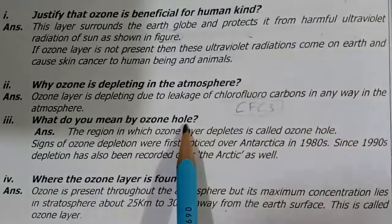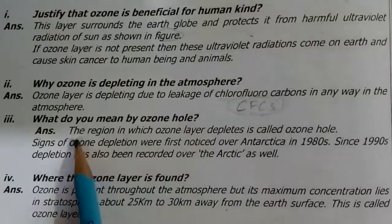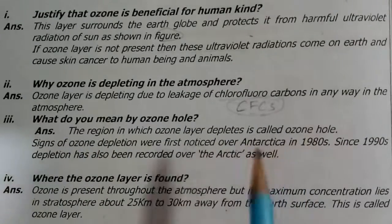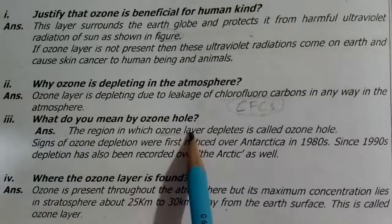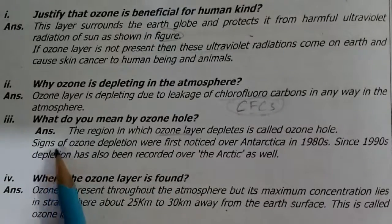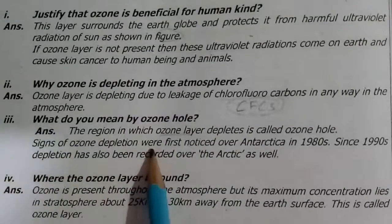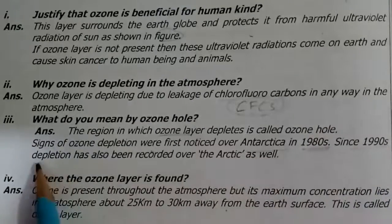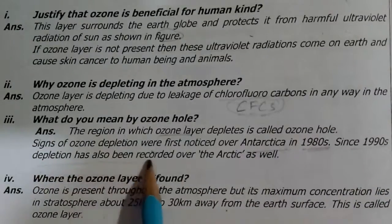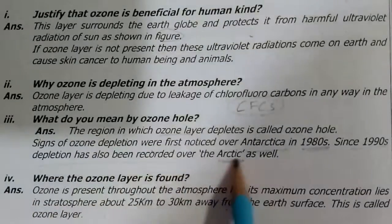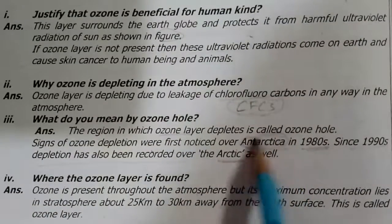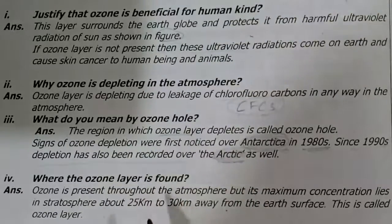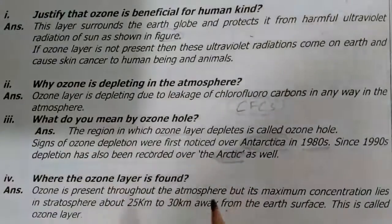Let's move to the third question: What do you mean by ozone hole? Ozone hole ka kya matlab hota hai? The region in which the ozone layer depletes is called the ozone hole. Aisi jagah jahan pe ozone layer khatam ho jaye, ozone hole kehlaati hai. Signs of ozone depletion were first noticed over Antarctica in the 1980s, and since the 1990s, depletion has also been recorded over the Arctic as well. That is disastrous — aisa nahi hona chahiye.